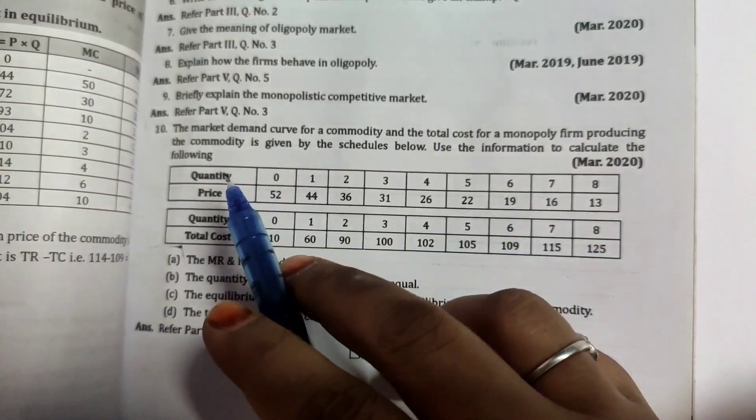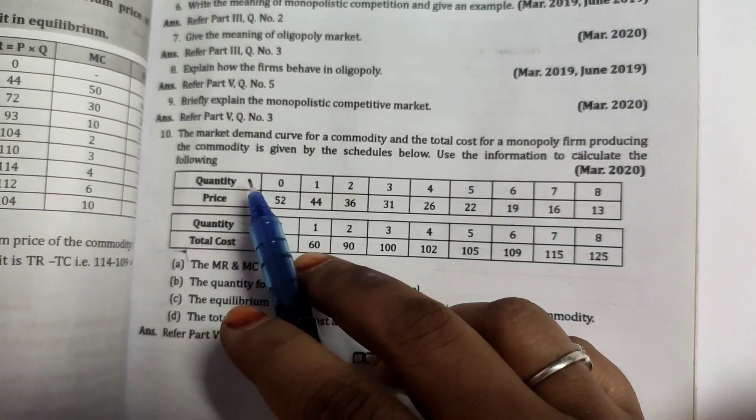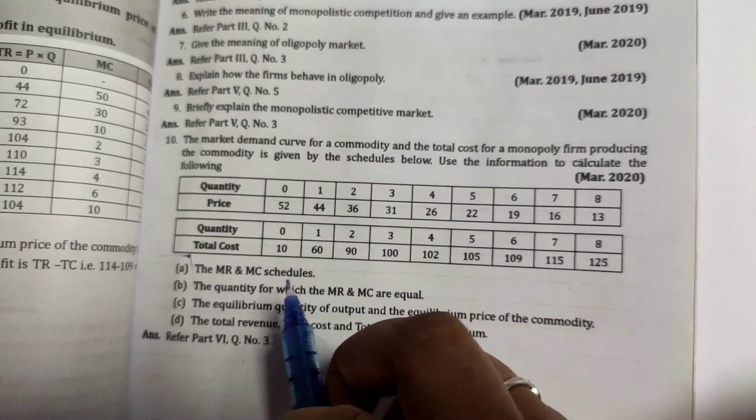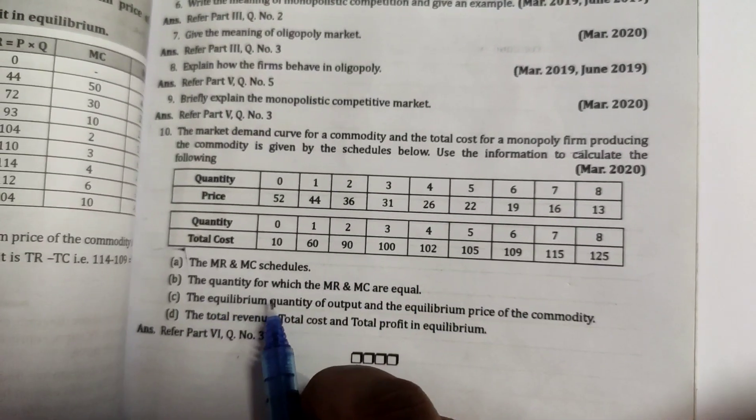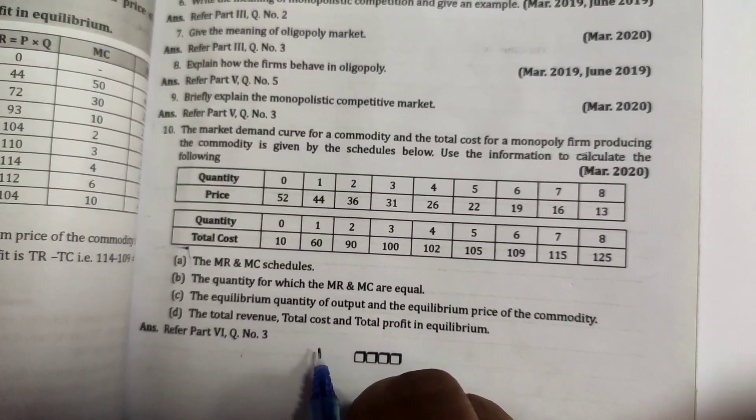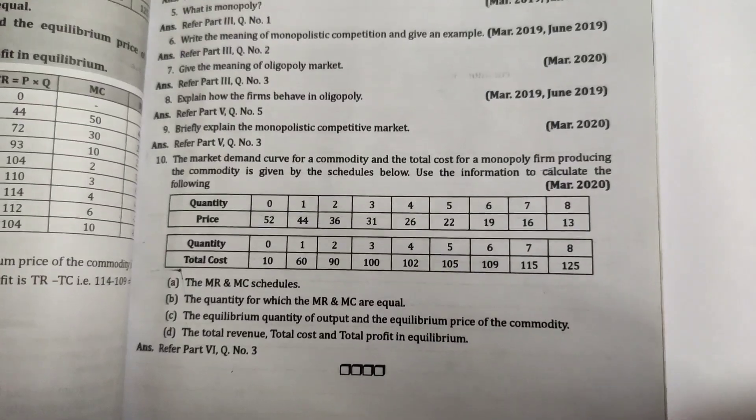The market demand curve for a commodity and the total cost for a monopoly firm producing the commodity is given by the schedule below. Use the information to calculate the following. Based on this information we need to calculate MR and MC schedule, quantity for which MR and MC are equal, equilibrium quantity of output and the equilibrium price of the commodity, total revenue, total cost, and total profit in equilibrium.